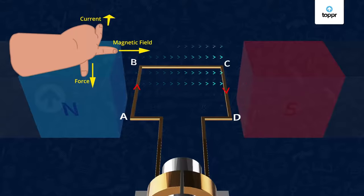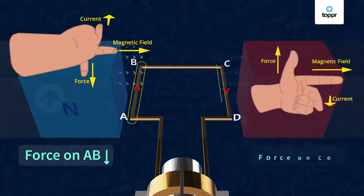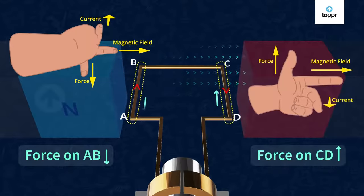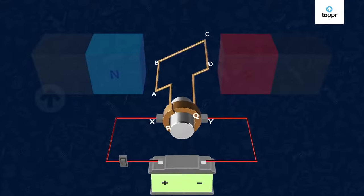If we apply Fleming's left-hand rule to the arm AB and CD separately, we can see that the force acting on arm AB pushes it downward while the force acting on CD pushes it upward. As a result of these two forces, the coil and axle rotate anti-clockwise through an axis.